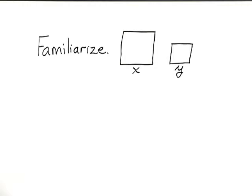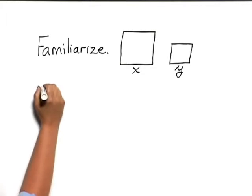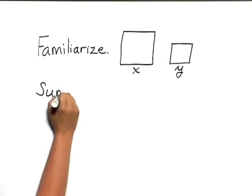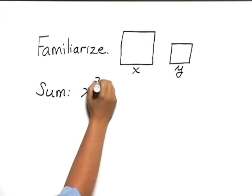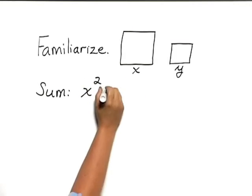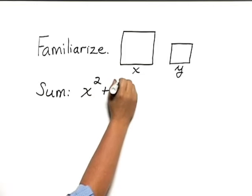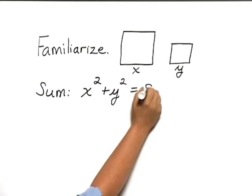Now, we're told that the sum of their areas is 8, so we can translate that into x squared, which is the area of the first square, plus y squared, which is the area of the second square, equals 8.